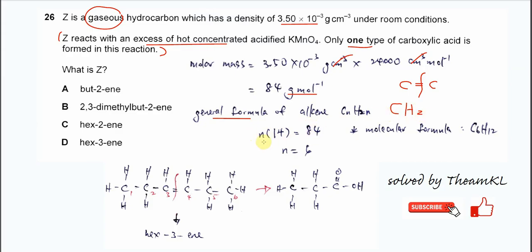So use N times 14. 14 is the empirical formula mass of CnH2n. Therefore N will get 6. So the carbon number is 6, and the molecular formula now is C6H12.